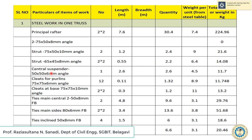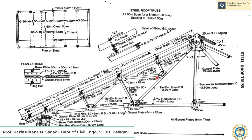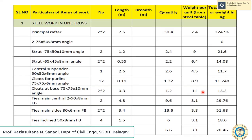Next is the central suspender, 50 x 50 x 6 mm angle, 2.6 meters long. The central suspender is located at the center of both sides of the truss, so there is only 1 number. The quantity is 2.6. Multiplying by weight per unit gives a total quantity of 11.7 kg.